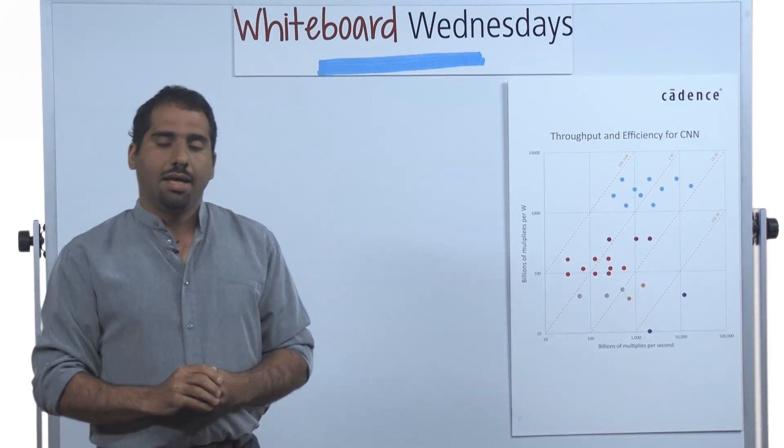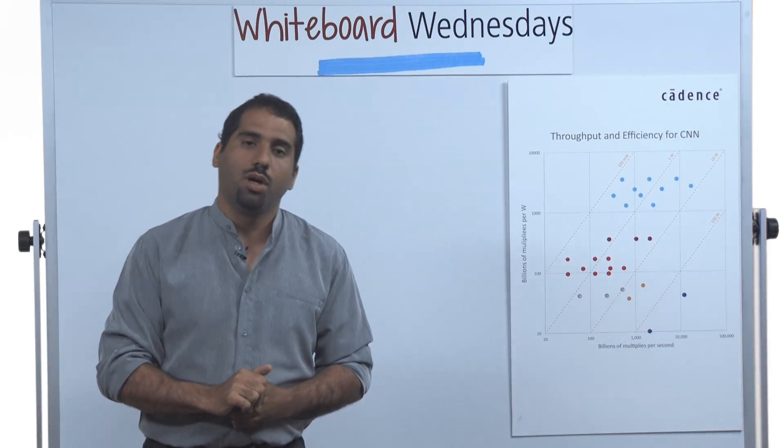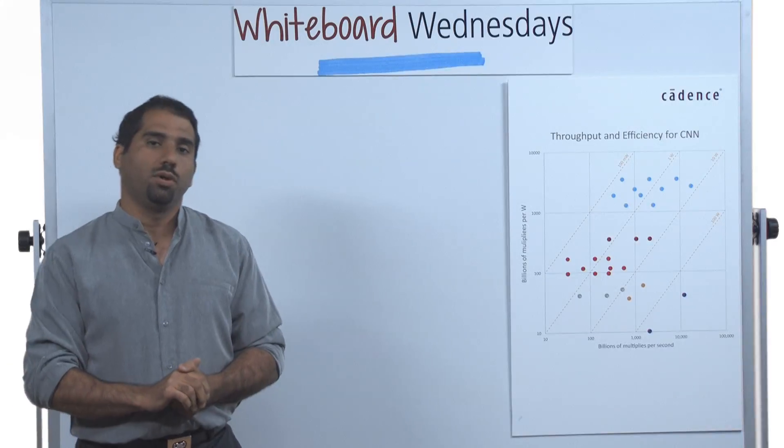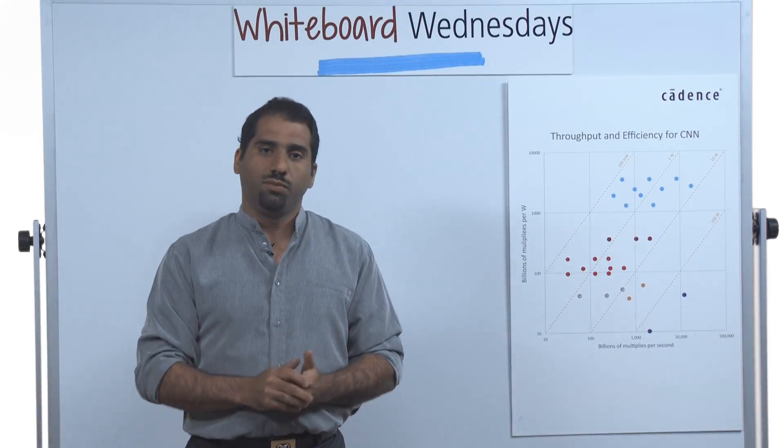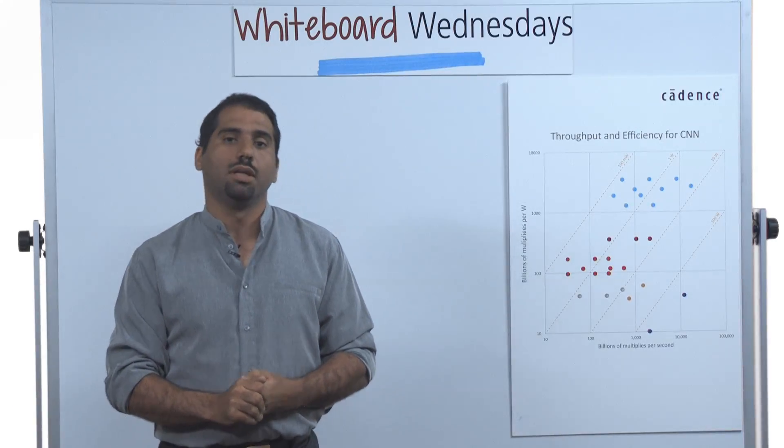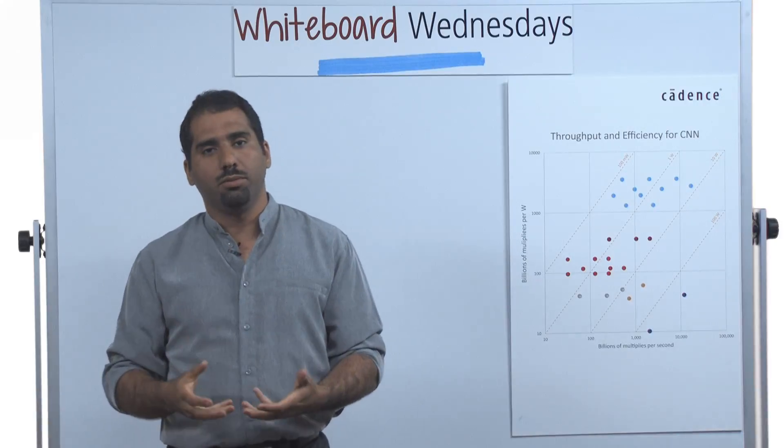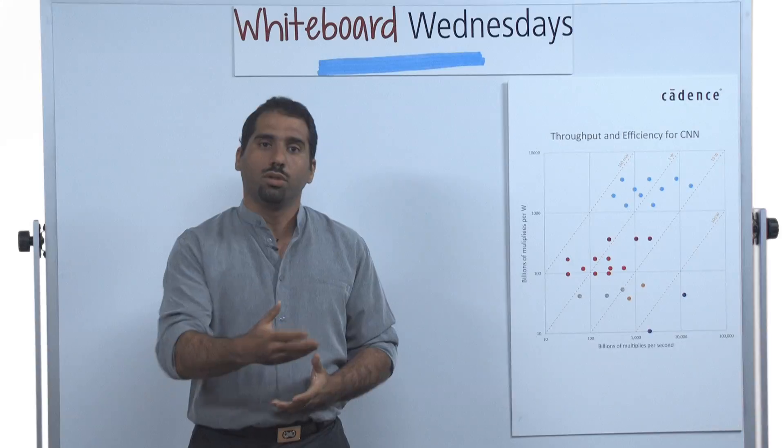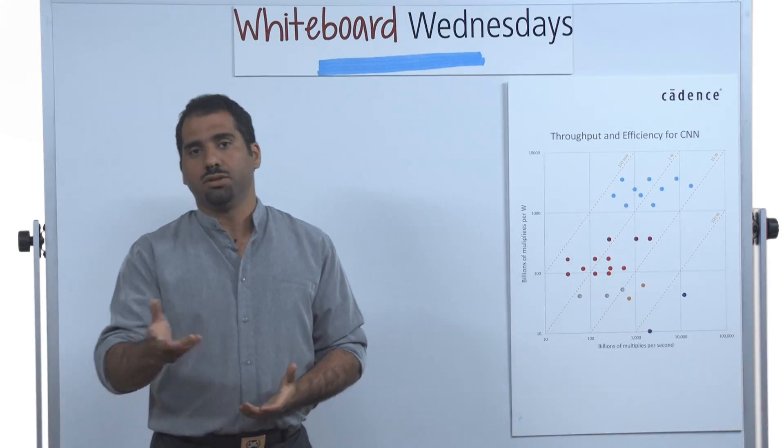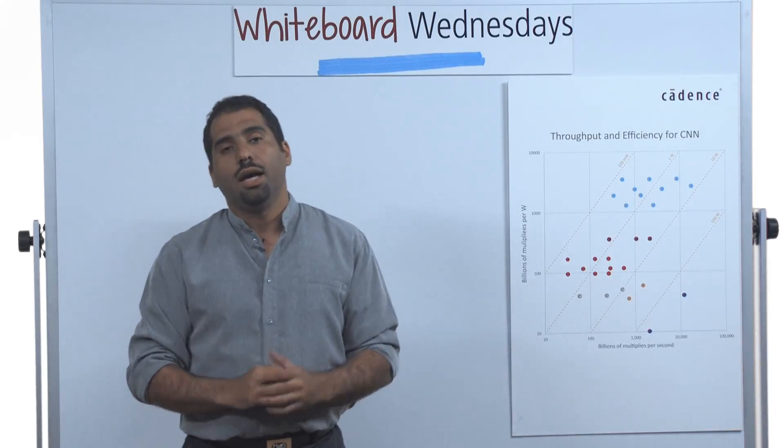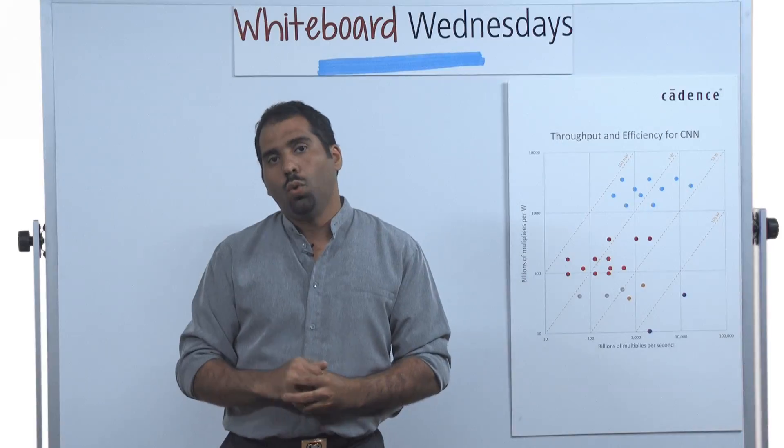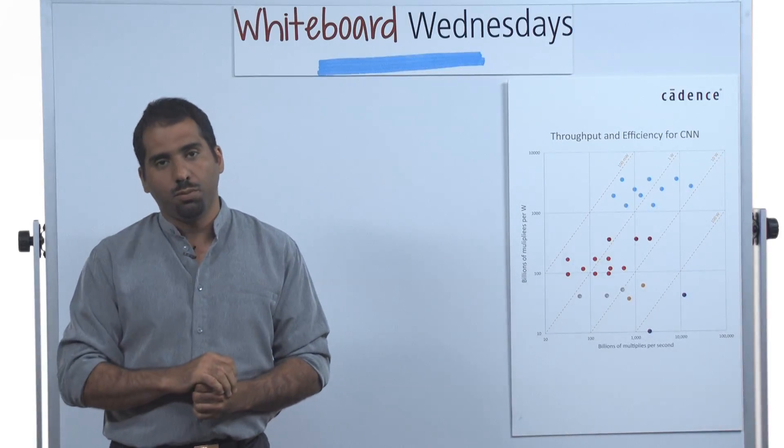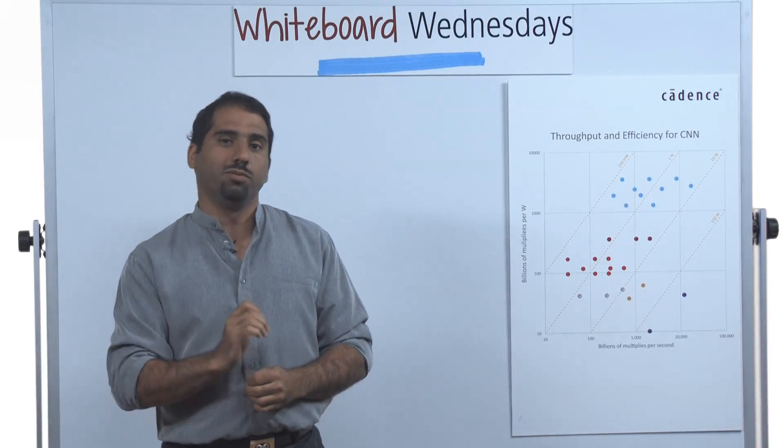These two particular angles—one is on the software and one on the hardware. On the software front, we'll be speaking about this in future Whiteboard Wednesdays, where we'll show how to enable researchers to take great ideas such as AlexNet or GoogleNet or Inception or even ResNet, and bring the complexity down without degradation in performance, and in some cases with slight improvement in performance.